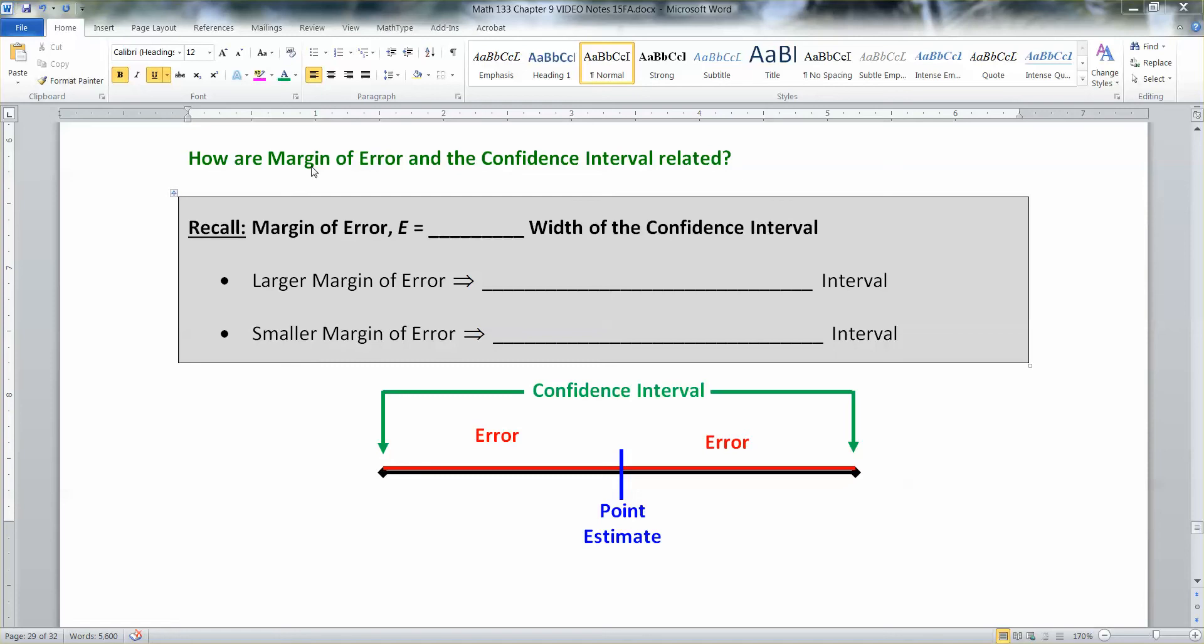Now we want to leave sample size behind and start thinking about the other topic in this section, which is some broad strokes ideas about confidence intervals. So the first thing we want to remind ourselves is something we learned about in chapter 9-1, and then we saw it again in 9-2, which is that your margin of error, which is capital E, is half the width of the interval.